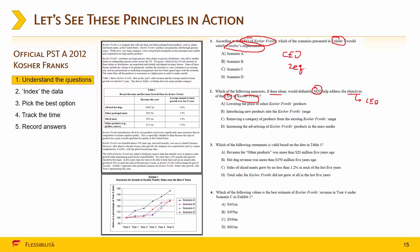Question number 3: Which of the following statements is valid based on the data in Table 1? Valid and Table 1. Question number 4: Which of the following values is best estimate of Kosher Franks Revenue in Year 4 under Scenario C in Exhibit 1? So Kosher Franks Revenue, Year 4, Scenario C and Exhibit 1. The next step is indexing the data.